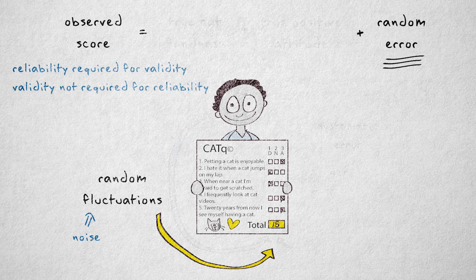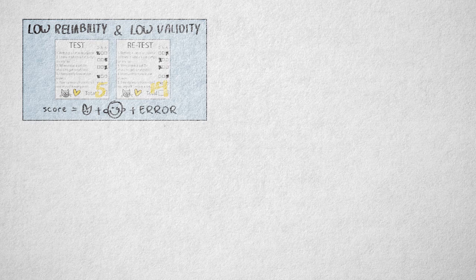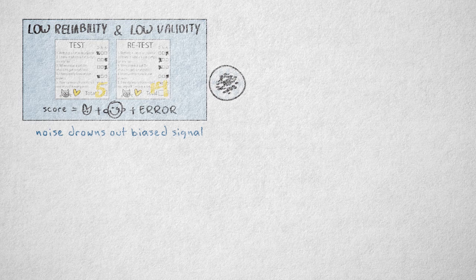Let's consider the possibilities in more detail. Of course, the worst case scenario is when an instrument has low reliability and low validity. A lot of random and systematic error. Even if the true score contributes a little to the observed score, it will be almost impossible to distinguish this contribution.